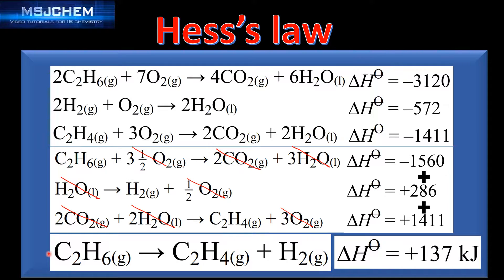To calculate the enthalpy change for the reaction, we add the three values together to give an enthalpy change of positive 137 kilojoules. Those are the two kinds of problems you're likely to get with Hess's law. Check the video description for a link to a practice worksheet.